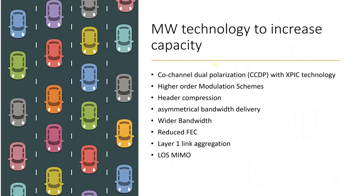In the initial legacy TDM times, whenever we wanted to increase the capacity of a microwave link, we used to work with only three things: increasing the modulation, increasing the bandwidth, and adding an additional channel or carrier. Consider a one-kilometer road — within a 30-minute duration, 100 cars can pass. If you want to increase the number of cars passing within the same 30 minutes, what options are available?